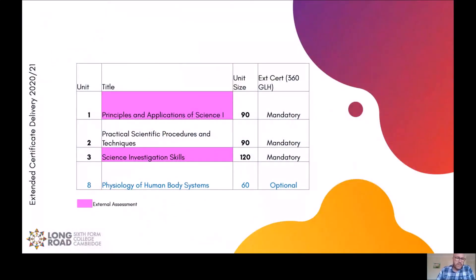So a little bit about the course. So the extended certificate. These are the actual units that you will encounter over a two year period. So within the first year, you will do unit one and unit two. In the second year, you will cover unit three and unit eight.